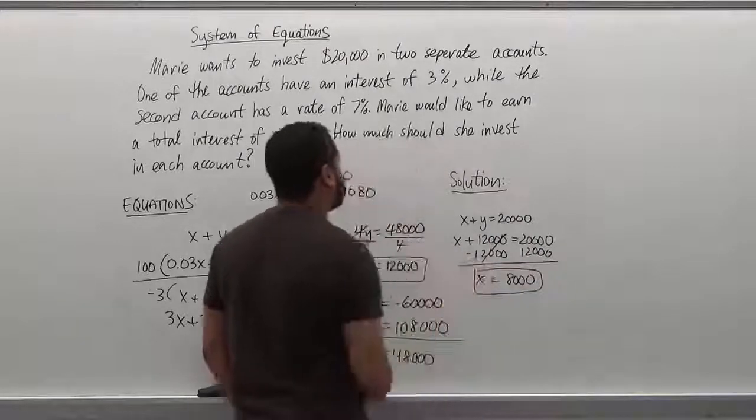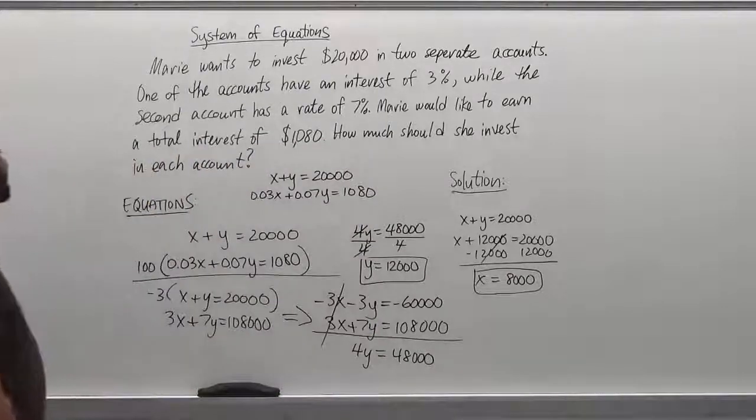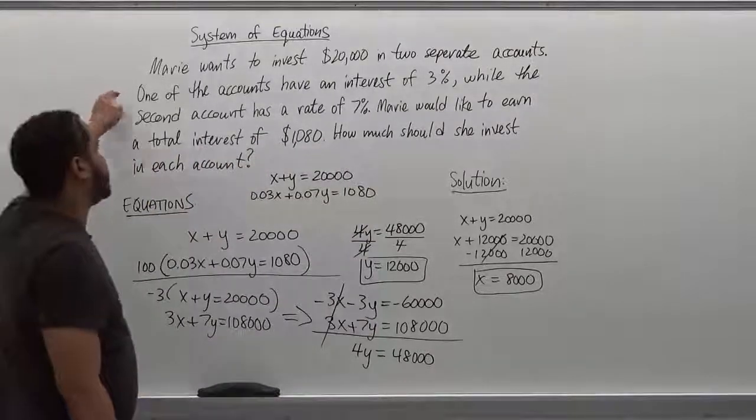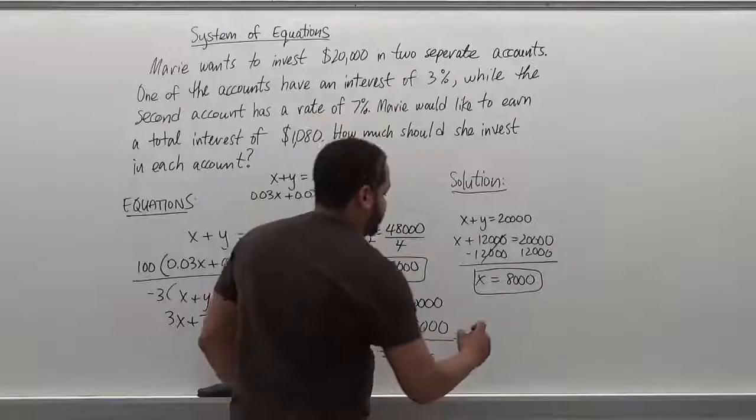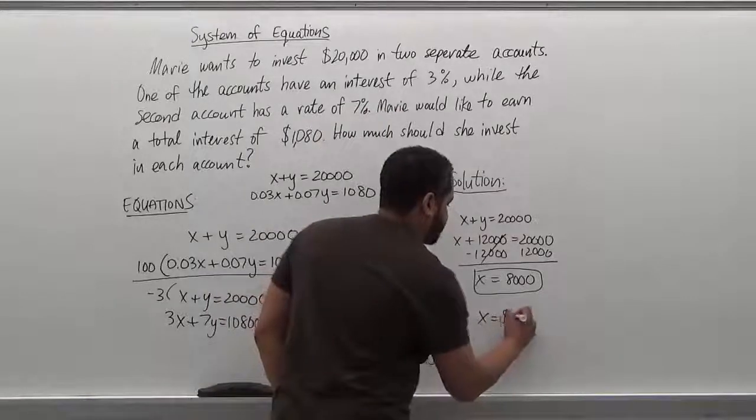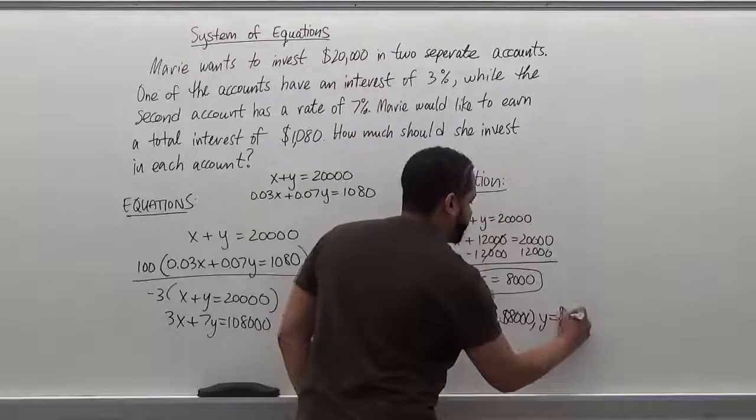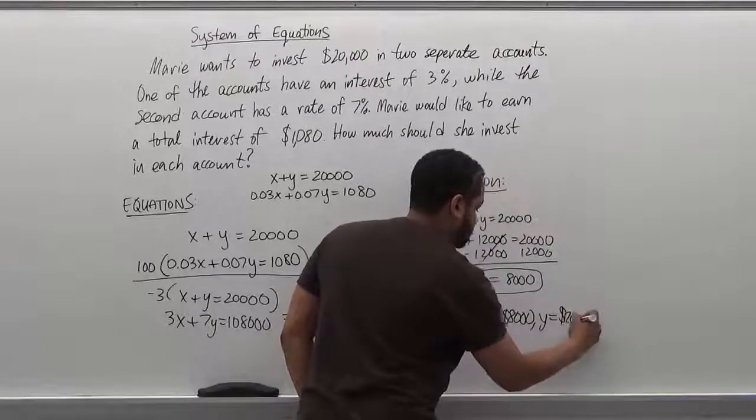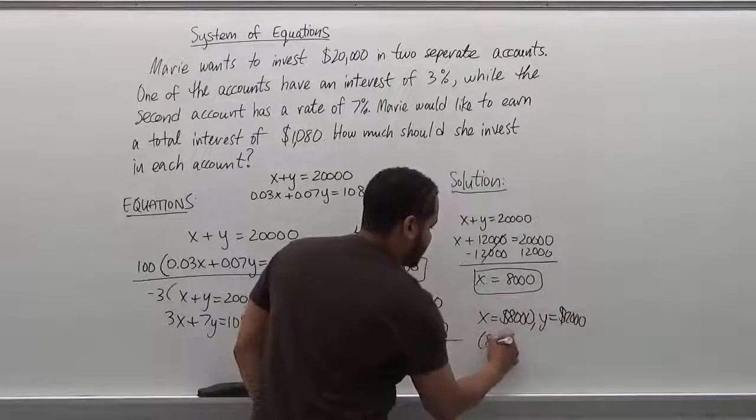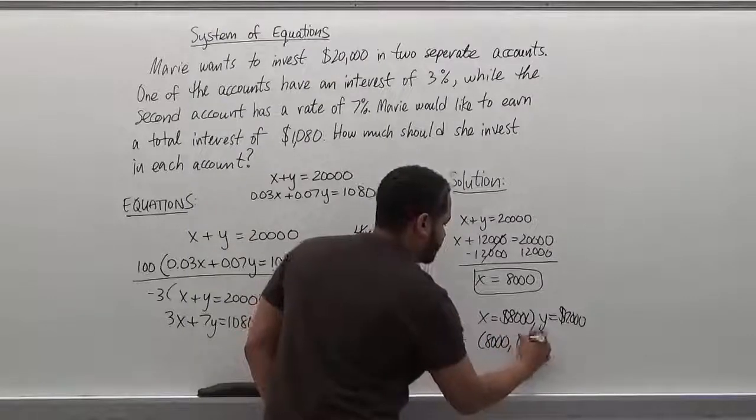So we have the amounts of each account. Account x is the first account that's invested at 3%. X is equivalent to 8,000. And y is equivalent to 12,000. So our solution for this is 8,000, 12,000, where x represents the first account and y represents the second account.